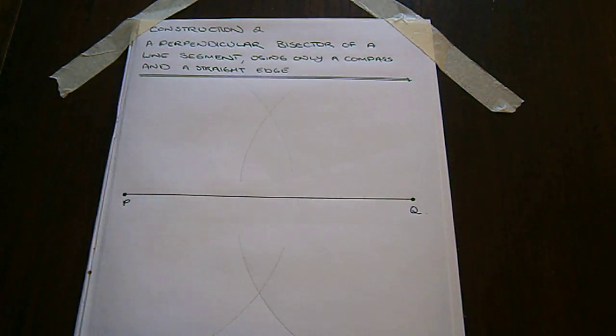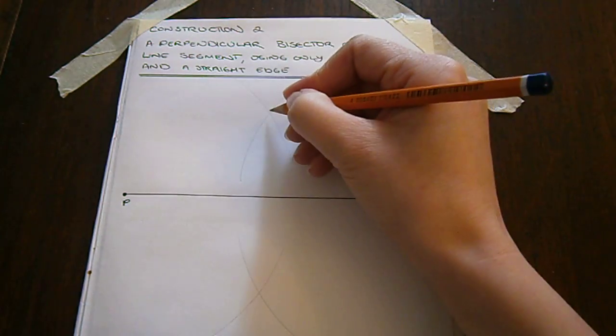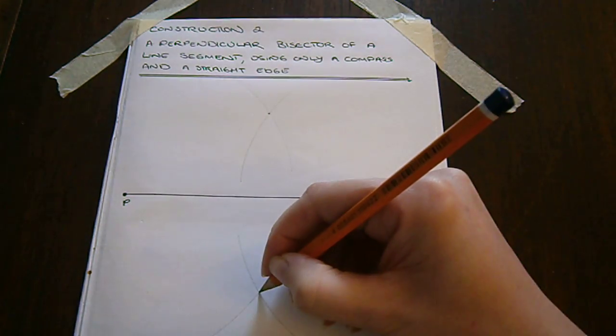Now, if we notice, we have two intersection points: one above the line, one below the line.